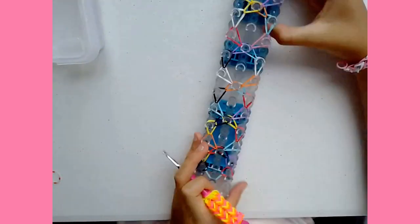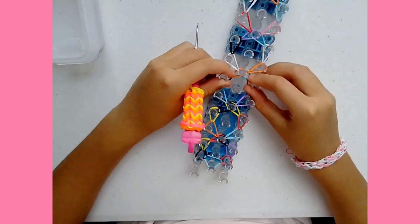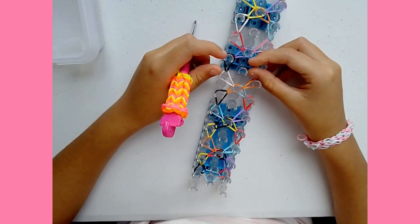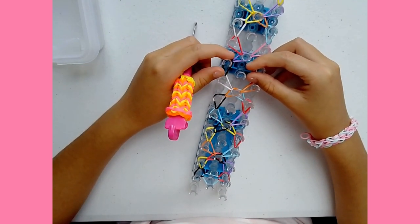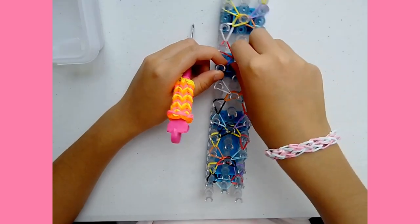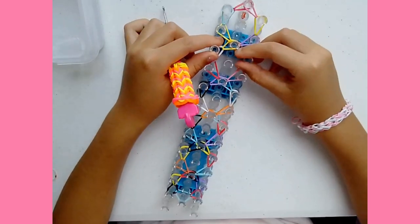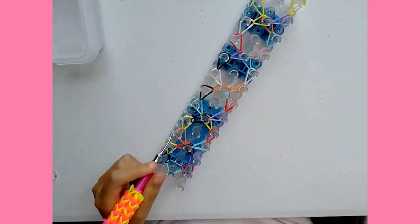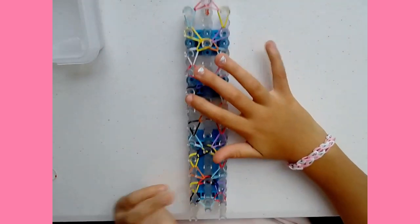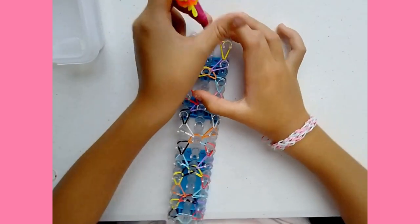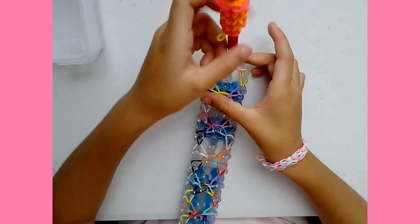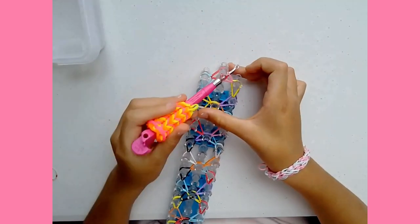So now we're done looping our bracelet, so it should look like this. Make sure you looped everything and everything looks like a teardrop. So now we can close off our bracelet. This is the part where we stick our hook. You can turn it around.